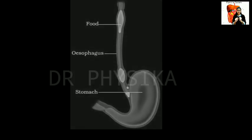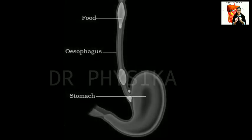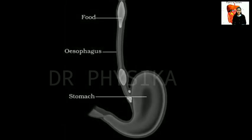The swallowed food passes into the food pipe or esophagus. The food pipe runs along the neck and the chest. The stomach is a thick-walled bag. It is shaped like a flat J and it is the widest part of the alimentary canal. It receives food from the food pipe at one end and opens into the small intestine at the other end.